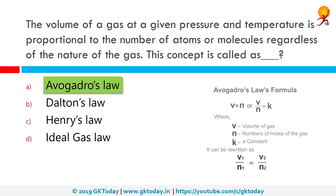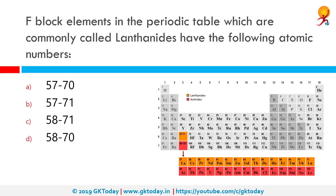F-block elements in the periodic table, commonly called lanthanides, have atomic numbers 57 to 71. The lanthanide series of chemical elements comprises 15 metallic chemical elements with atomic numbers 57 to 71, from lanthanum through lutetium.